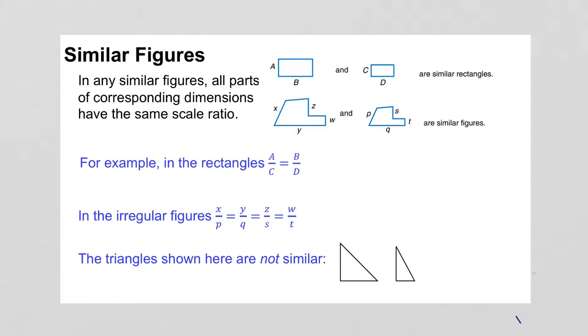Here in these rectangles, we've got this width over the width, so A over C, is equal to the length over the length, B over D. And with this other picture, you've got X over P is the same thing as Y over Q, would be the same ratio as Z over S, and that would be the same ratio as W over T. Here's an example of two triangles that aren't similar because they're not the same shape.